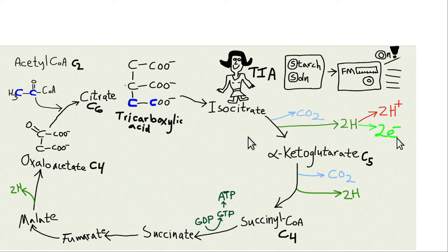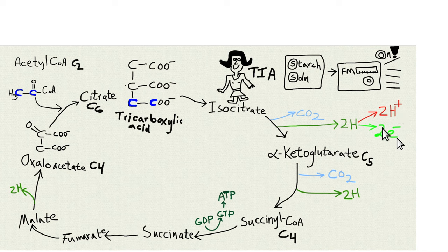The cycle runs in this direction for catabolism — for breakdown of molecules to generate energy — and CO2 is excreted as a waste product. The real desirable product is pulling hydrogens off and splitting them into protons and electrons to generate energy. It's kind of like burning carbon material in a fire, except human metabolism breaks it down into many small controllable steps, so the energy is released gradually and can be converted into ATP.